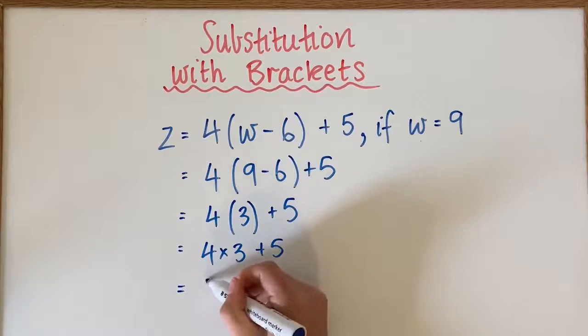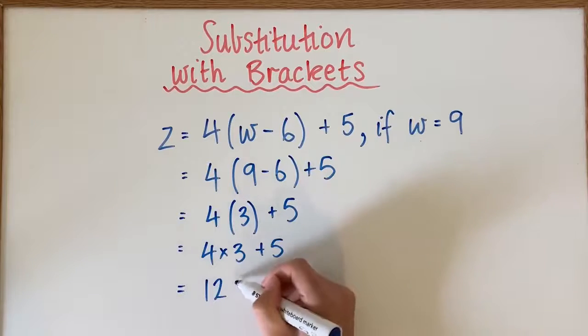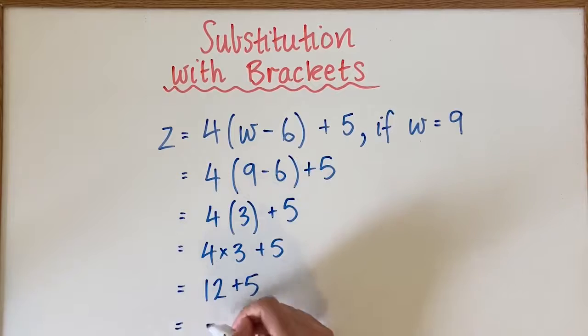4 times 3 is 12 plus 5, we're going to end up with 17.